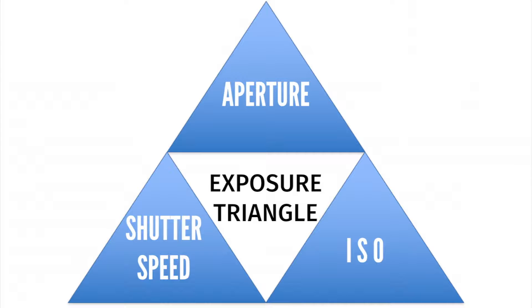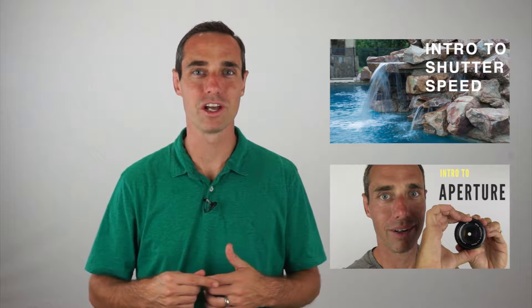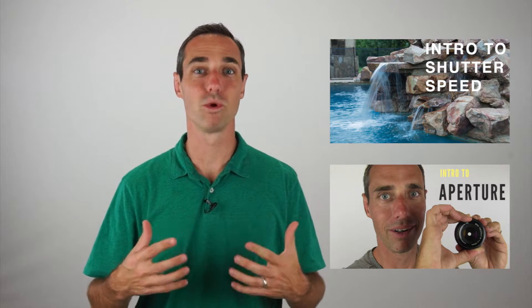Hello and welcome to this PhotographyTV.com video. I'm Paul Fontanelli and today we're going to talk about ISO. ISO is one of the three components of the exposure triangle. The exposure triangle is made up of shutter speed, aperture, and ISO. If you're not familiar with shutter speed or aperture, check out these other videos to fully explore those.